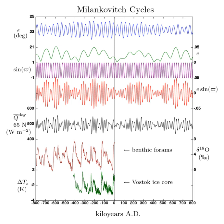When the Earth's axis is aligned such that aphelion and perihelion occur near the equinoxes, axial tilt will not be aligned with or against eccentricity.